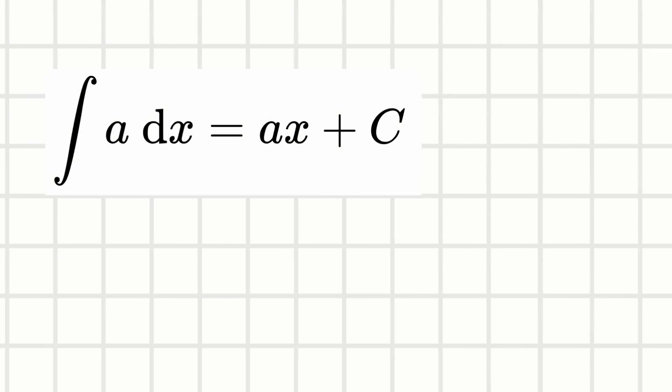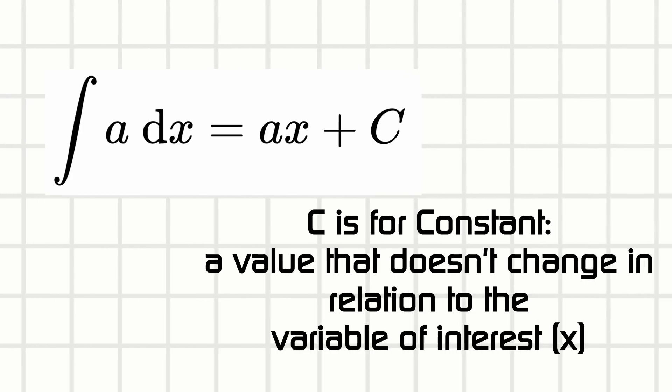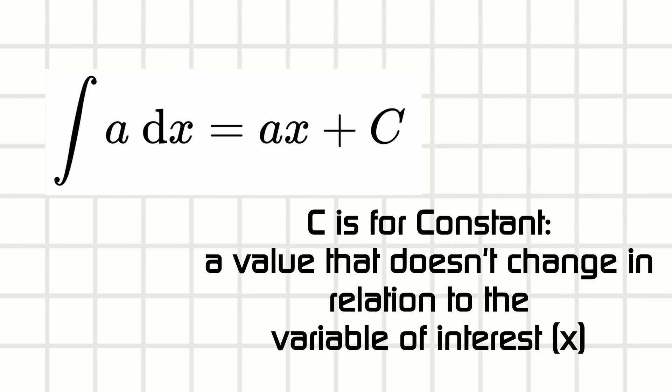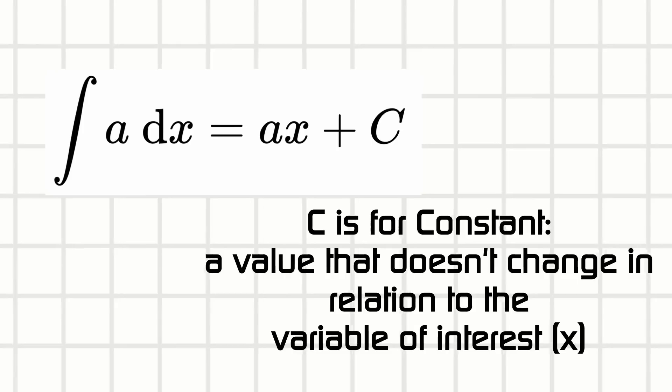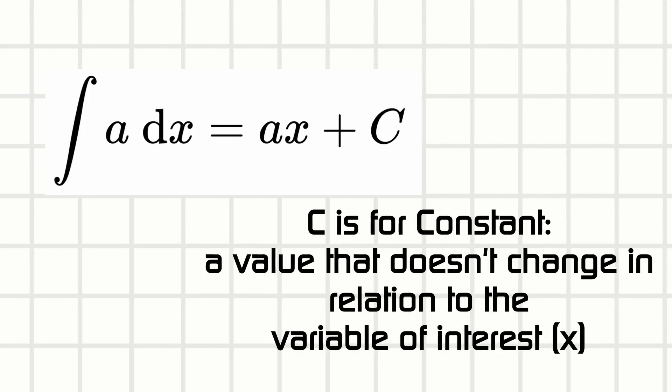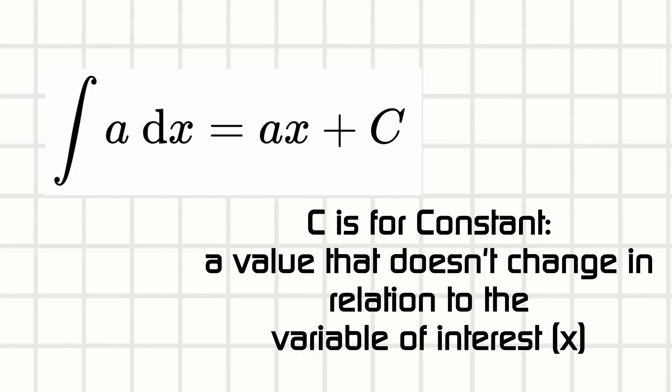Also, by the way, this plus C here, this constant here is often added to an indefinite integral because when you take the derivative of a constant, it just kaput goes to zero. So we don't actually know what constant it would have started at. It could have started at 1, 2, bajillion. That's why we just put in C. That's just kind of like the blank number.